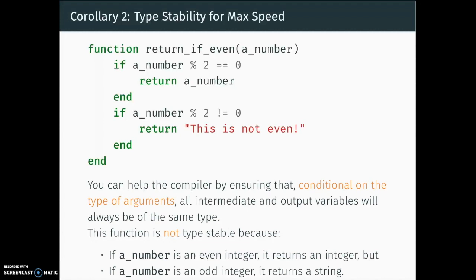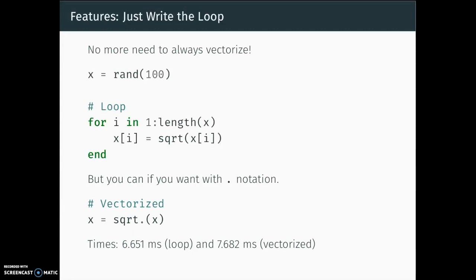One of the first nice features of Julia: you can go back to just writing the loop. If you've worked in Python or R, you're familiar with the rule that if you want something to go fast, you have to vectorize it — you're just not allowed to write loops. In Julia, it is totally fine to write the loop. There is a dot notation that says 'vectorize the function that comes before it and apply it to this vector', but there's no penalty for writing things in loops. In fact, in this case it's marginally faster to write the loop than to vectorize.